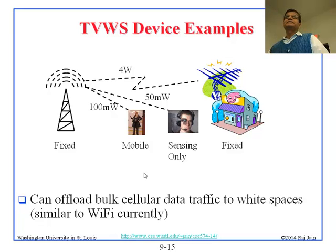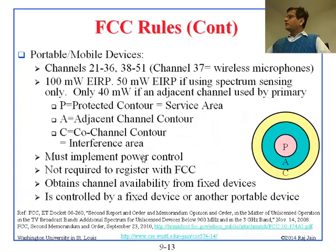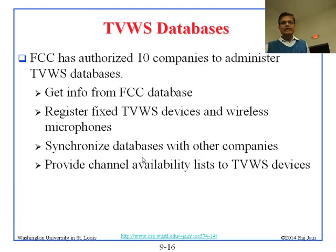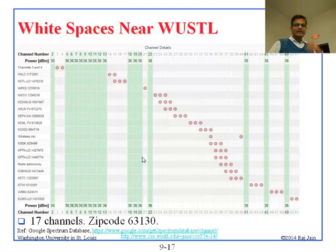The current name for this technology is Super Wi-Fi, though the Wi-Fi Alliance complained that 'Wi-Fi' is their trademark, so FCC now calls it Super Fi. This technology is not yet fully implemented — the FCC is still making rules. There are 10 companies that can administer white space databases in the United States. They get information from the FCC, register devices and microphones, synchronize the database with other companies — Microsoft and Google are two I remember — and provide channel availability lists to other devices.